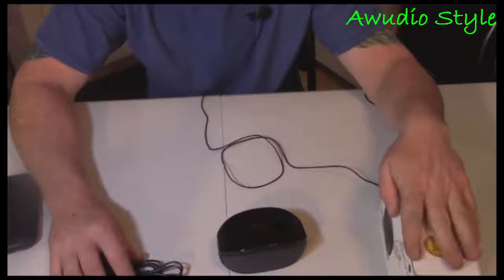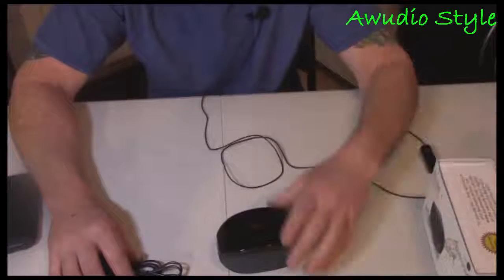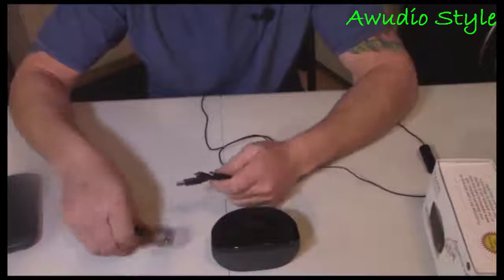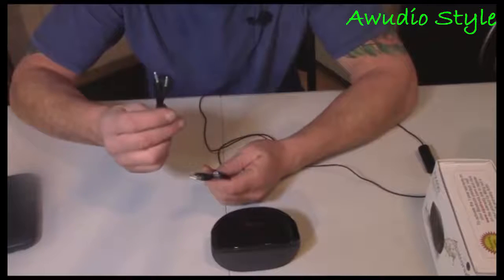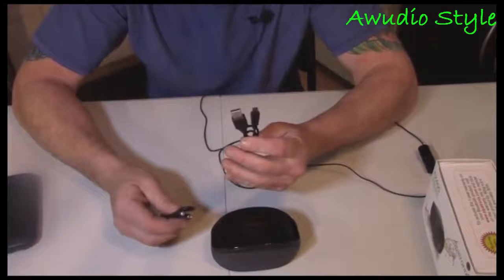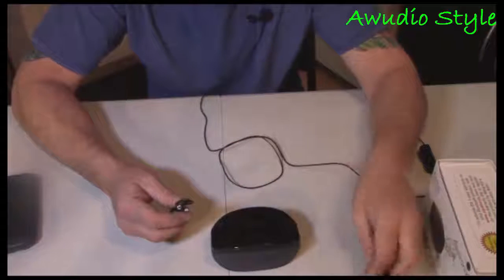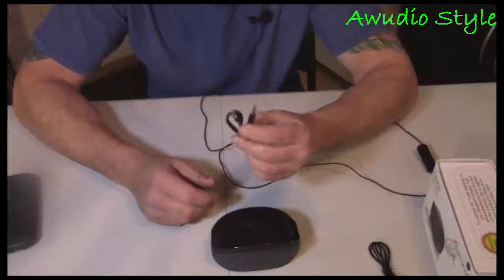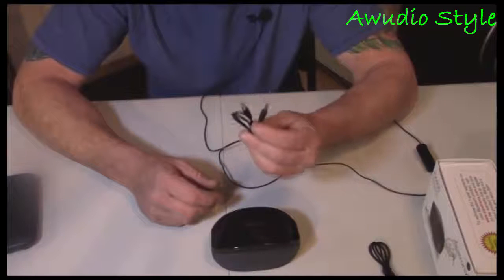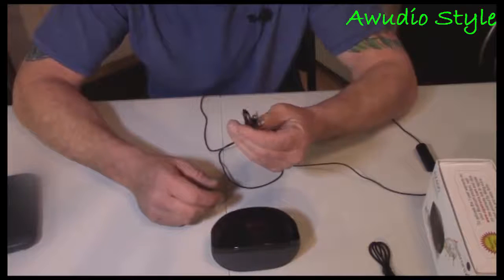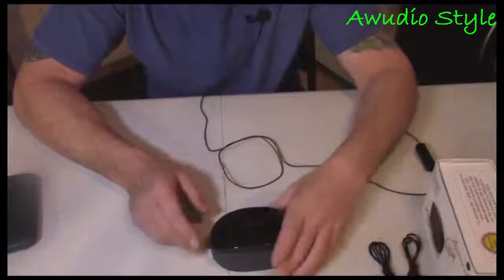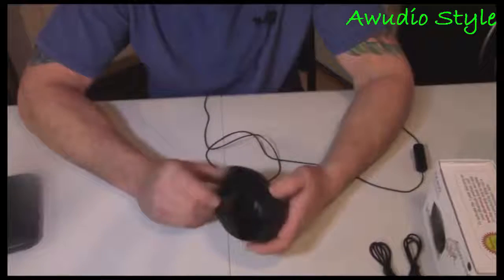It's very easy to read, very easy to Bluetooth to your phone. These are the cables you're going to get: standard 3.5 millimeter jack cable and a USB to micro USB cable. This is for charging the speaker, and this is of course if you don't want to Bluetooth it but you want to plug it into your media device. You can use this on the back.